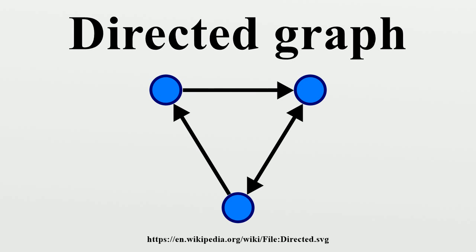In formal terms, a directed graph is an ordered pair G equals, where V is a set whose elements are called vertices, nodes, or points.